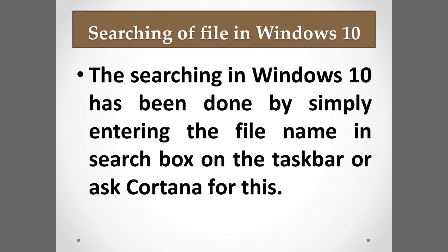Now we come to searching files in Windows 10. On the bottom left corner of the Windows 10 desktop, there is a search option where you can type the file name and it will automatically be displayed on the screen. You can also ask Cortana — an artificial intelligence assistant — to search for the file, just like you ask Google on your mobile.